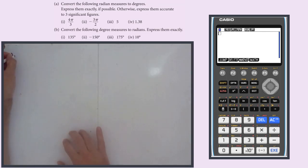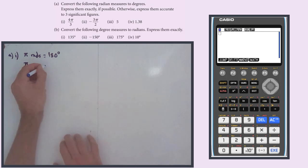So if we start with A, the first one, we've got 4π over 3. So I'm going to start with π equals 180. π radians equals 180 degrees. And I'm thinking, can I turn π into 4π by 3? Well, of course I can. I know that π by 3, I'm just going to drop the radians. π by 3 is going to be 180 divided by 3, which is 60. So 4π by 3 is going to be 4 times 60 equals 240 degrees.